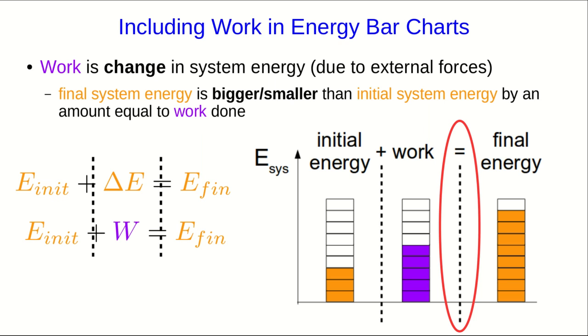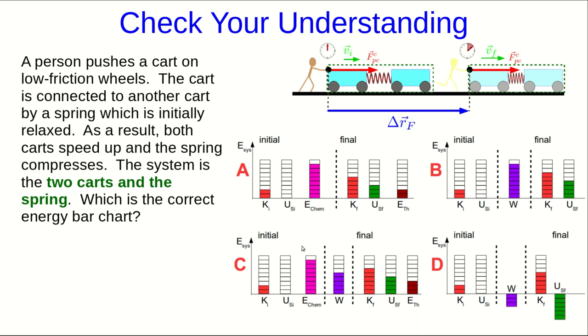Let's check your understanding of how to include work in an energy bar chart. Here I have a situation where we have two carts on low-friction wheels, and they're connected together by a spring which is initially relaxed. A person pushes on them so that they both speed up and the spring compresses as a result. The system, as I've shown in the diagram, is the two carts and the spring. Choose which of these is the correct energy bar chart.